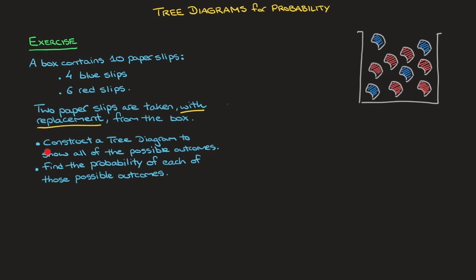Let's see how to construct a tree diagram for this experiment. Starting from any random point here, we need to illustrate the possible outcomes of the first paper slip we pick from this box. Since there are only blue and red slips, there are only two possible outcomes — either blue or red. Starting from this point, I can either get a blue slip — I write B here, as in blue — or we could get a red slip, and I'll write a capital R for red.